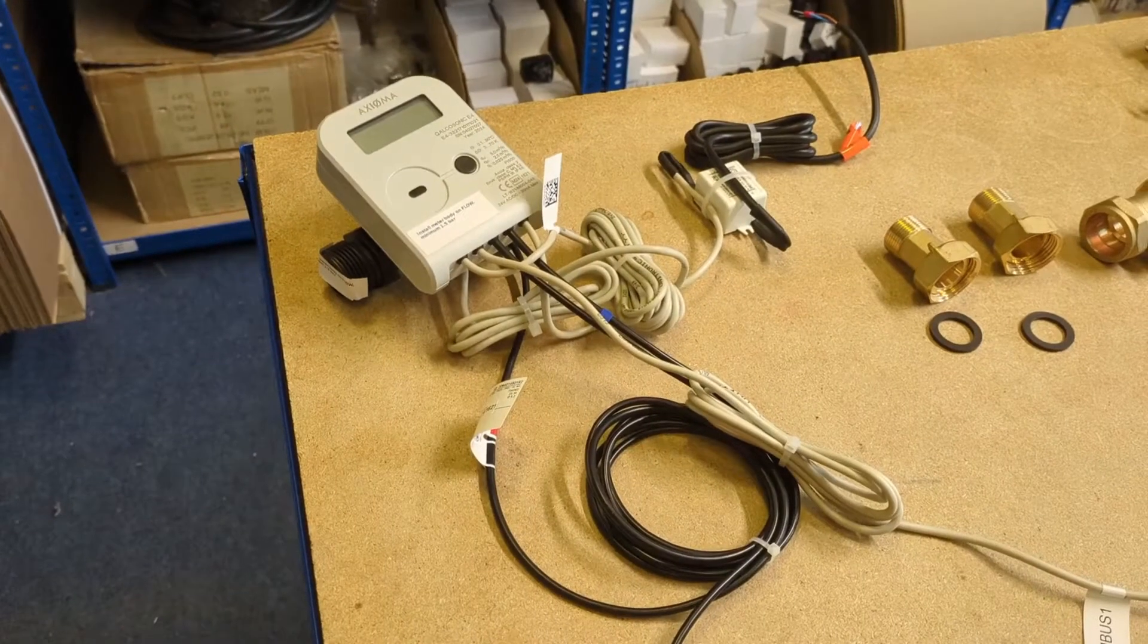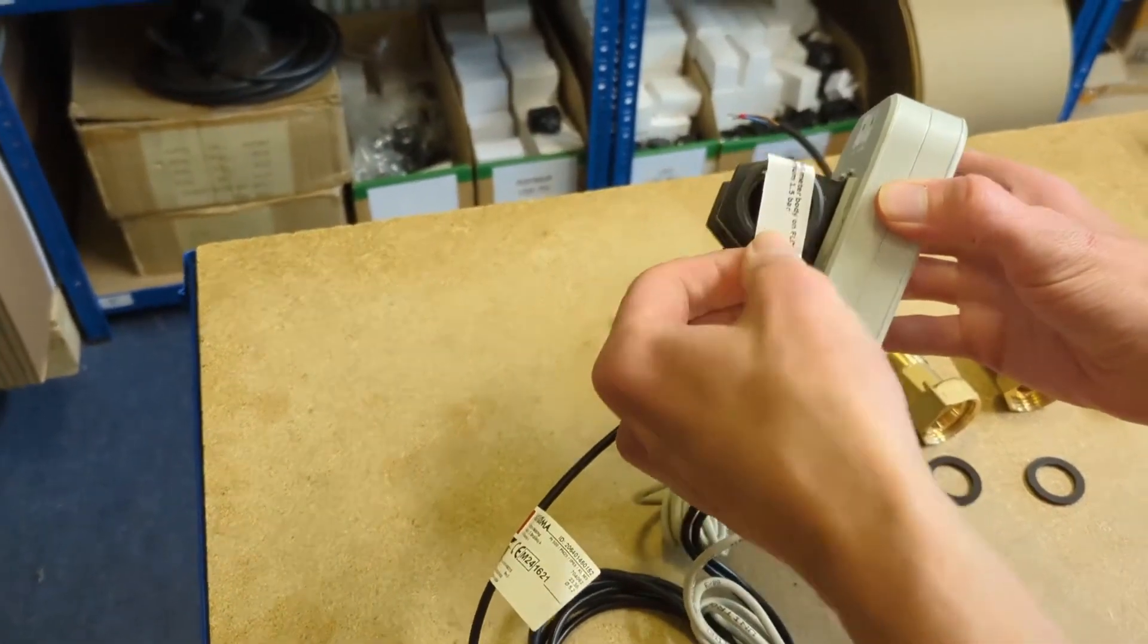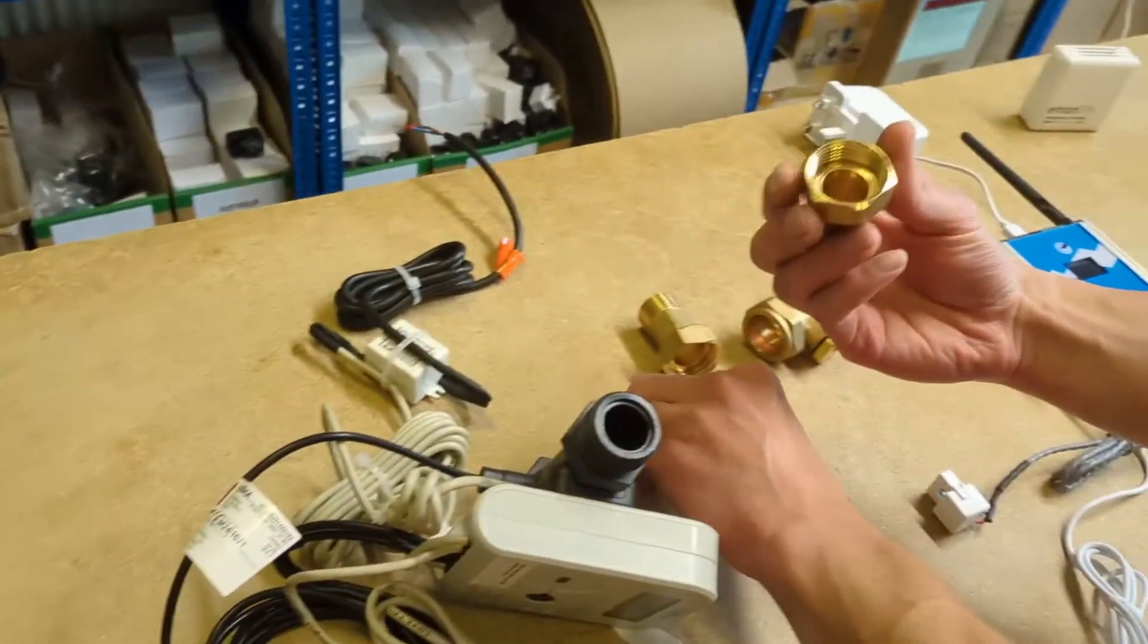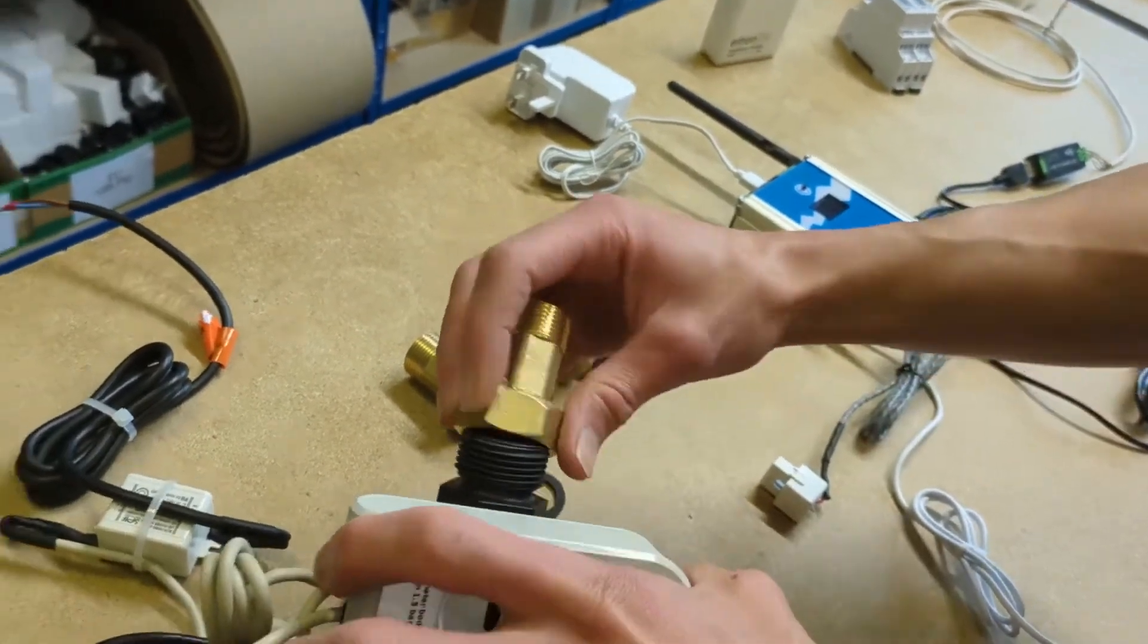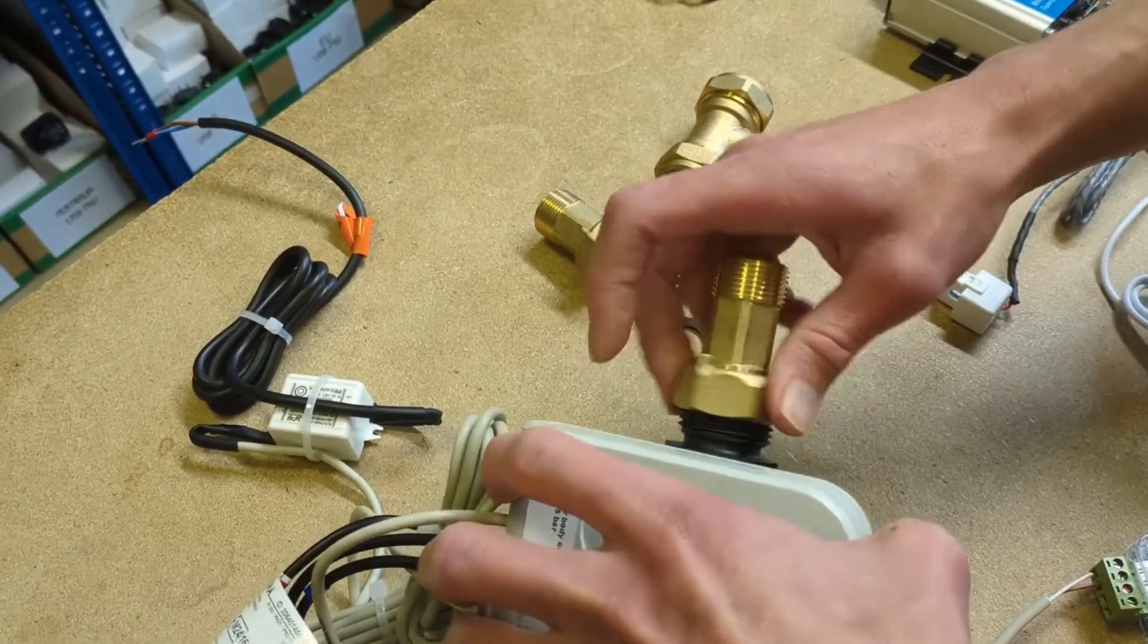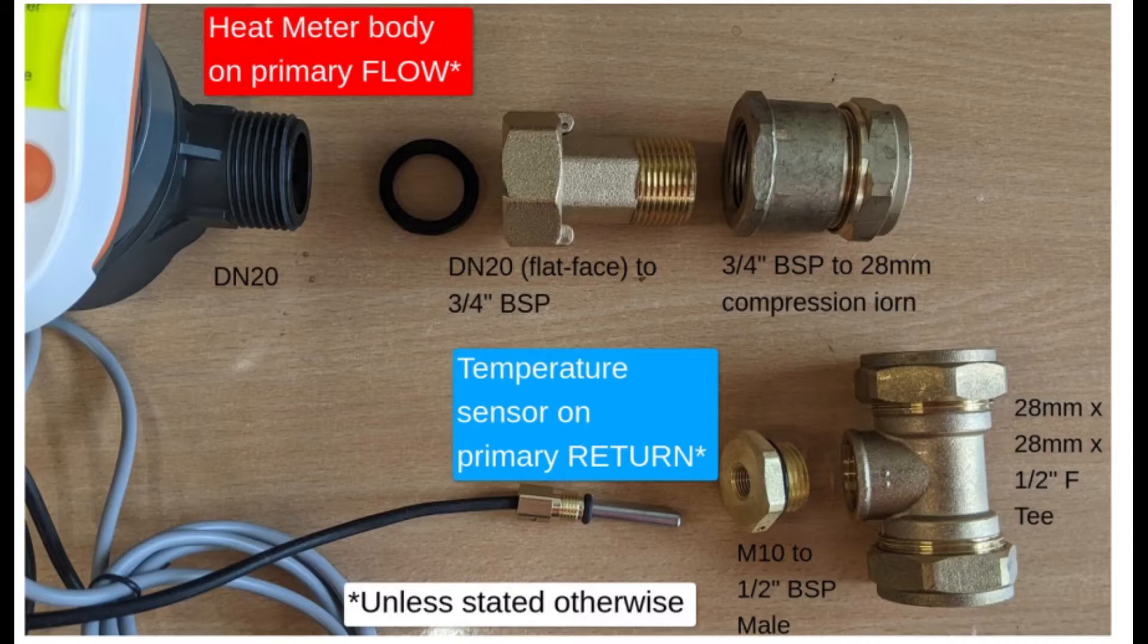This is the smallest heat meter we do. It has one inch parallel threads and is supplied with three quarter inch water meter unions. These are flat face unions with a rubber washer. You don't need to use these supplied water meter unions, but whatever fitting you do use needs to have a flat face. If you try and go on to these parallel threads with a BSP female iron, you'll have trouble sealing it up.